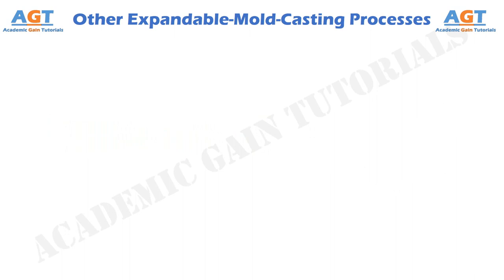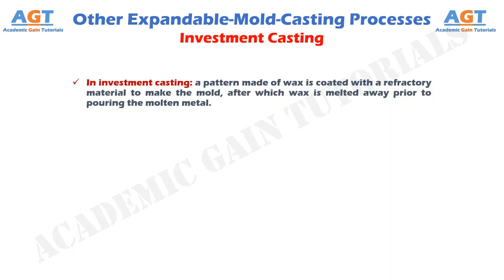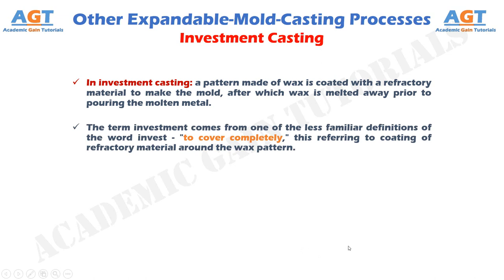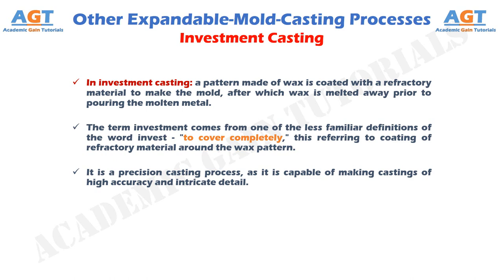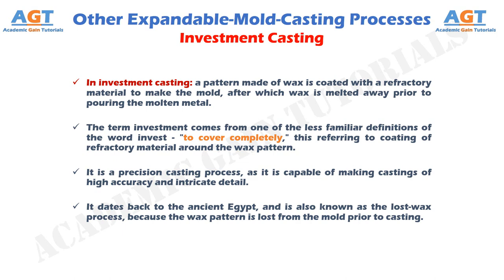Except sand casting, there are other casting processes that have been developed to meet special needs. The difference between these methods are in the composition of the mold material, or the manner in which the mold is made, or in the way the pattern is made. In investment casting, a pattern made of wax is coated with a refractory material to make the mold, after which the wax is melted away prior to pouring the molten metal. The term investment comes from one of the less familiar definitions of the word invest — to cover completely — referring to the coating of refractory material around the wax pattern. It is a precision casting process, capable of making castings of high accuracy and intricate detail. It dates back to ancient Egypt and is also known as the lost wax process, because the wax pattern is lost from the mold prior to casting.